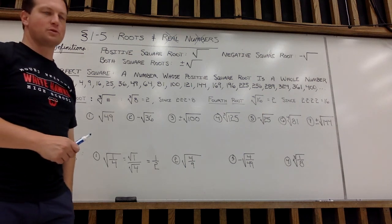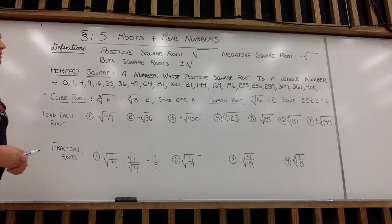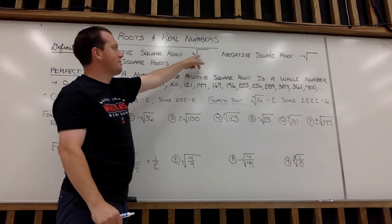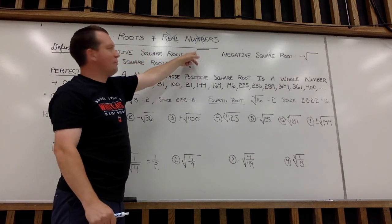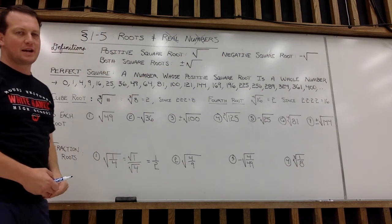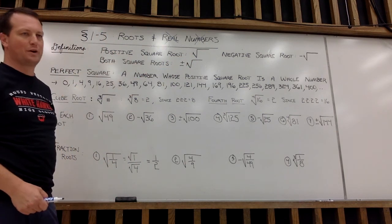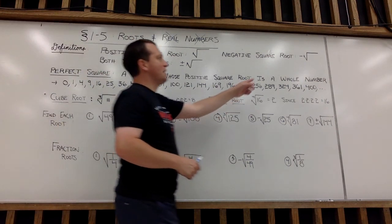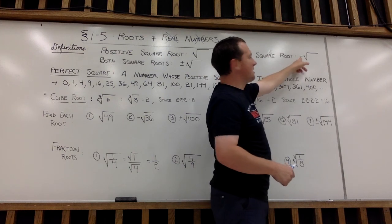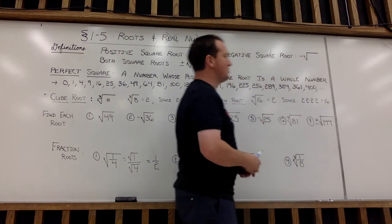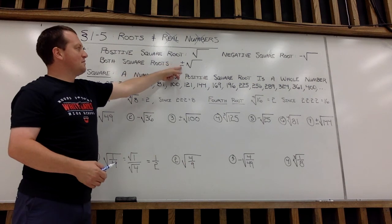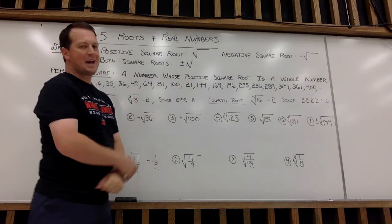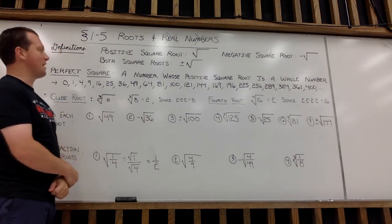Square roots, cubed roots, fourth roots. A couple of definitions. If I have a radical here with no number in the elbow, no sign on the outside, that indicates I want to take the positive square root of that number inside my radical. If I have a minus sign floating outside, that means I want to take the negative square root of the number on the inside. A positive negative plus minus sign indicates I want to take both the positive and negative square roots of that number inside the radical.